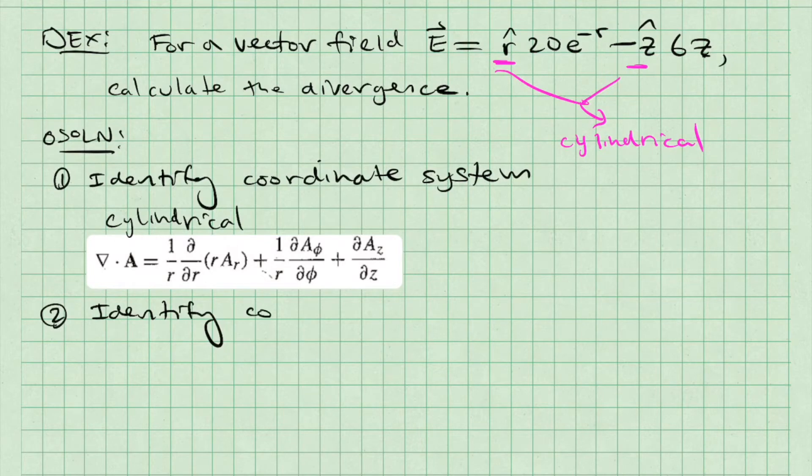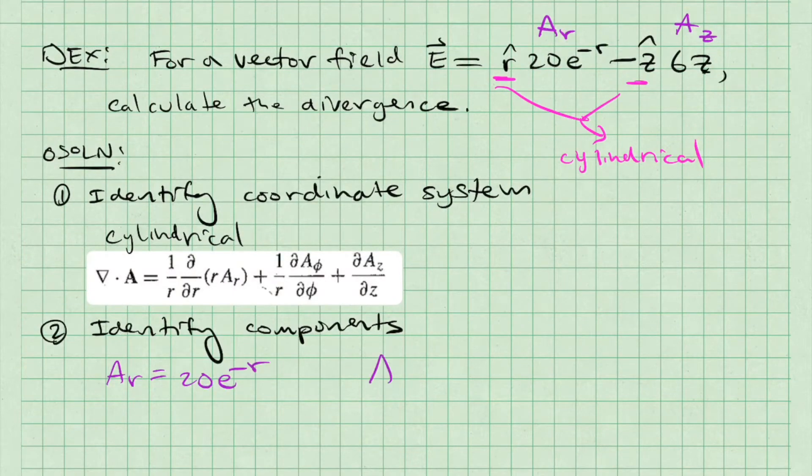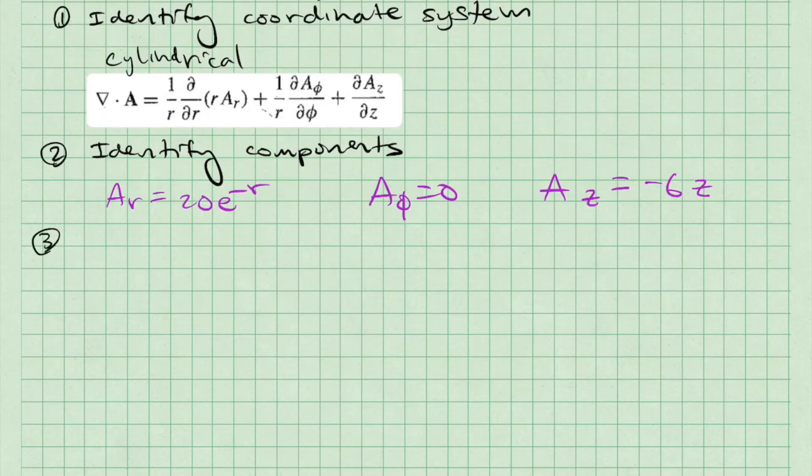Next, we want to identify the r, phi, and z components of the vector field. I'll denote these as A sub r, A sub phi, and A sub z. We notice that there is no component for A sub phi. That means there is nothing multiplied by phi hat. As a result, we say that component is zero.